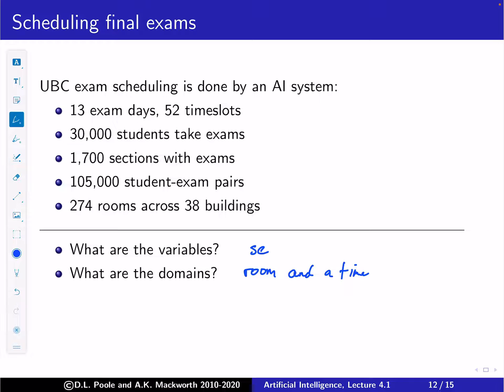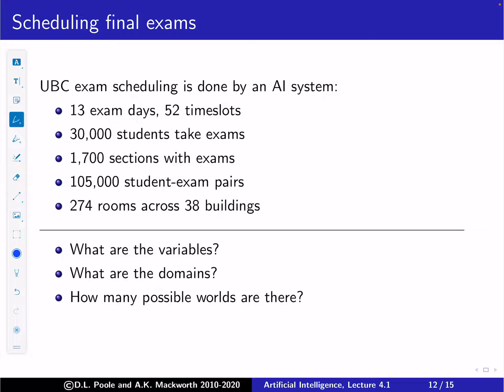Considering only the time assignments: there are 52 time slots and 1,700 sections, so the number of possible worlds is 52 to the 1700 — an enormous number. And that's just for assigning times, before even considering room assignments.